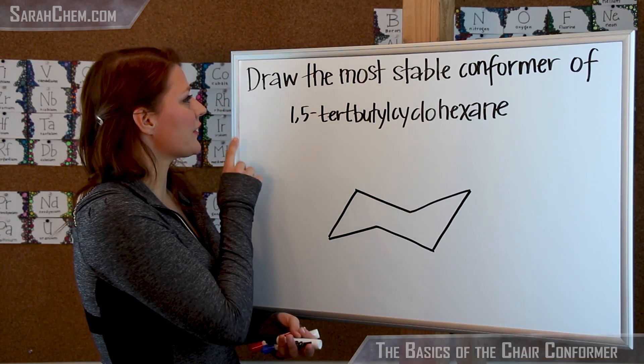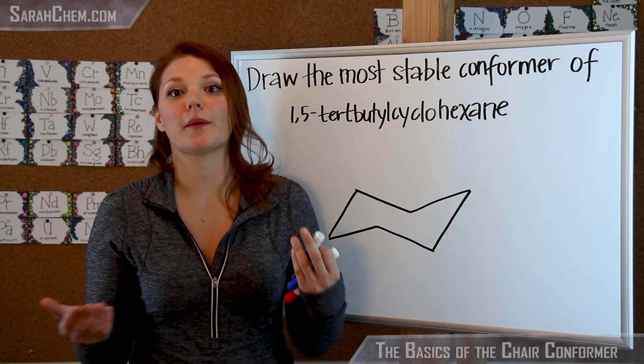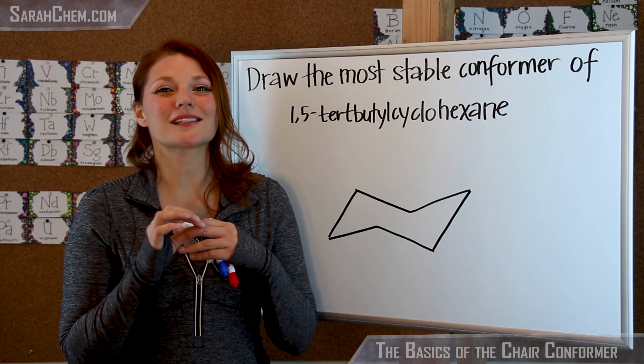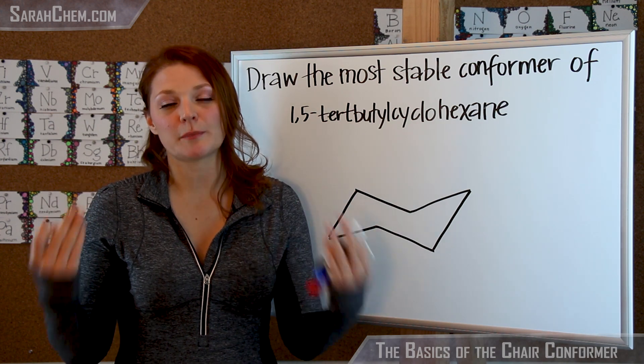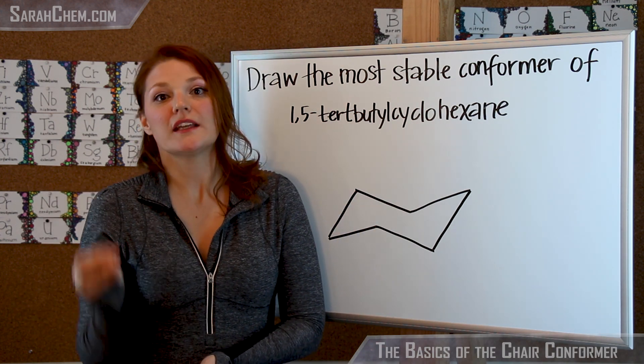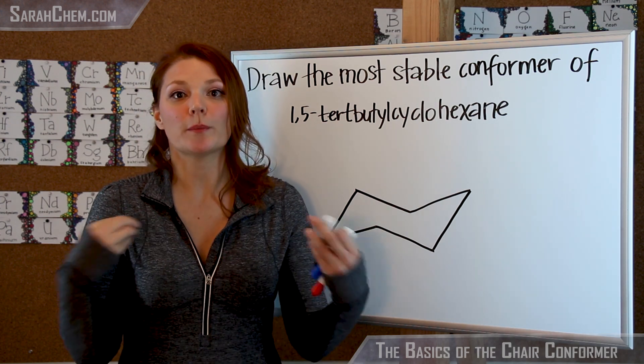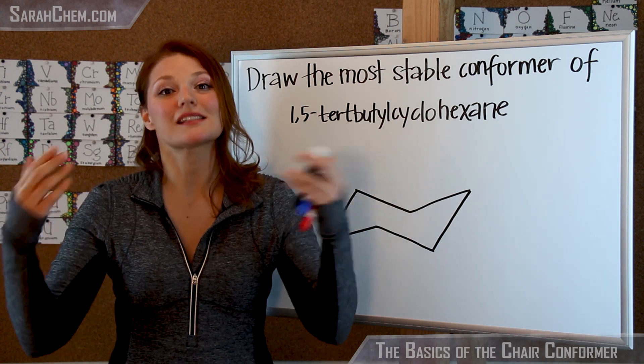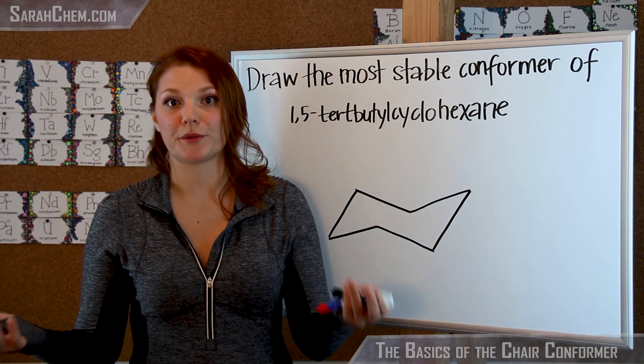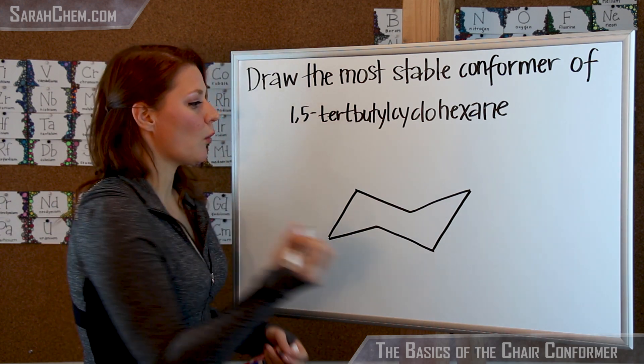In this example, we see that they're asking us to draw the most stable conformer of 1,5-tert-butylcyclohexane. So this question is about stability. And when we're talking about stability, what we're actually talking about is, how have you placed the substituents? Did you correctly place them on an axial position or an equatorial position? Remembering that big, bulky things are more stable when you put them on these equatorial positions. So now, before actually beginning, let's first draw what the positions are.